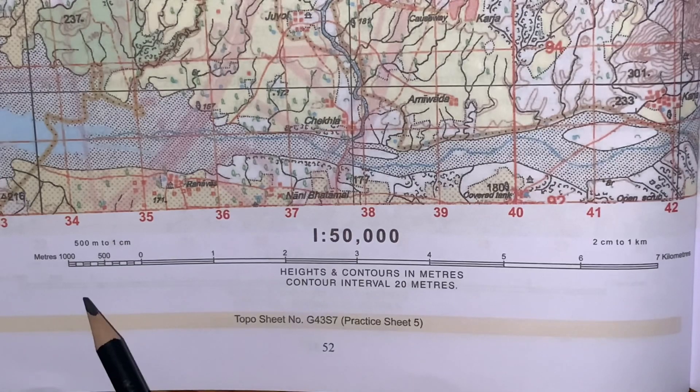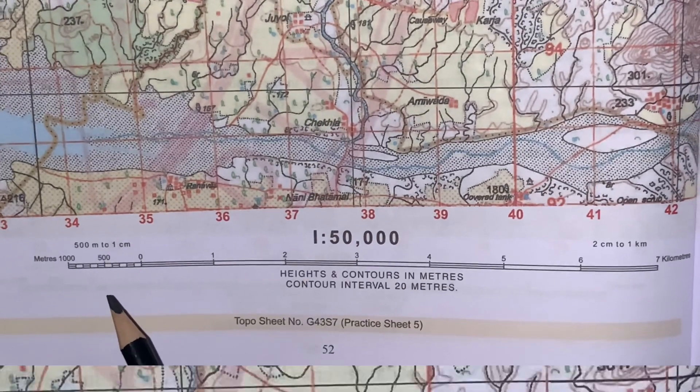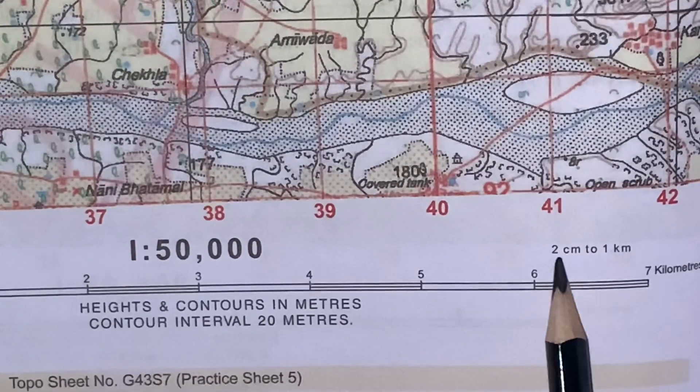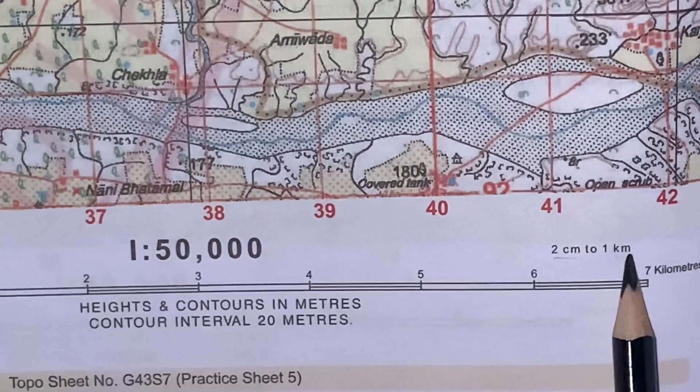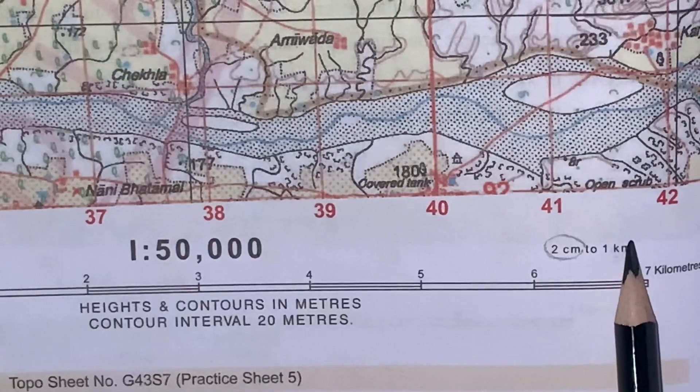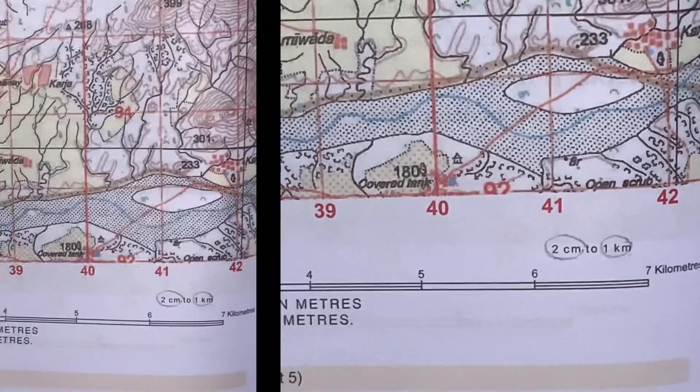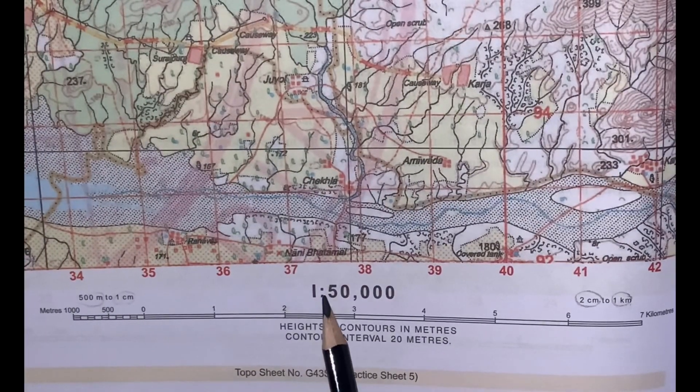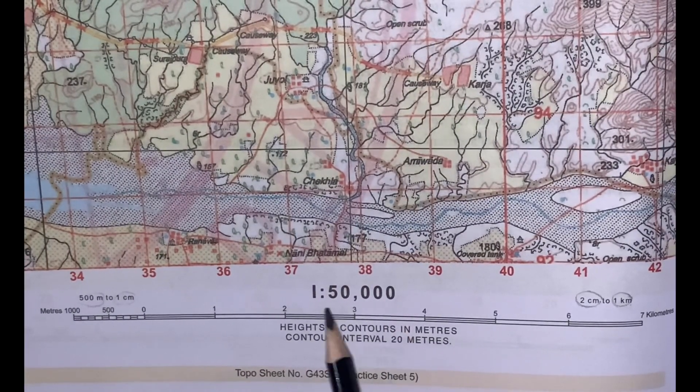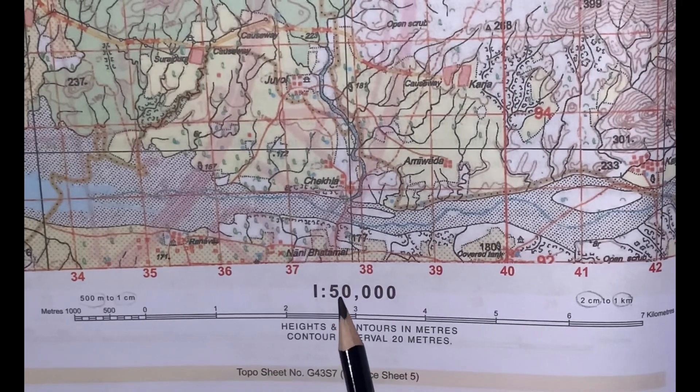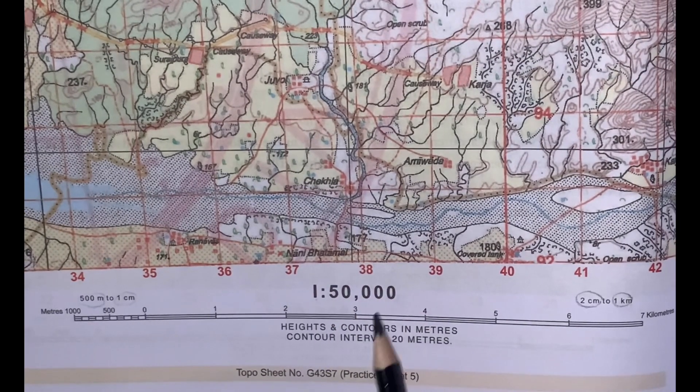Towards the right of the map is the verbal scale example: 2 centimeters on the map equals 1 kilometer on the ground. In the center, you'll find the representative fraction written, which you read as 1 centimeter on the map represents 50,000 centimeters on the ground.